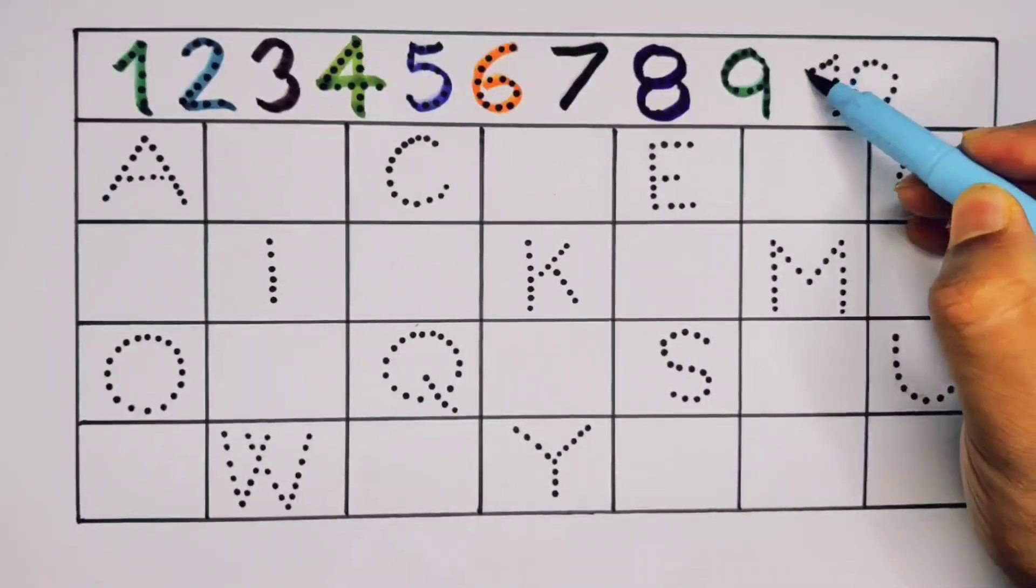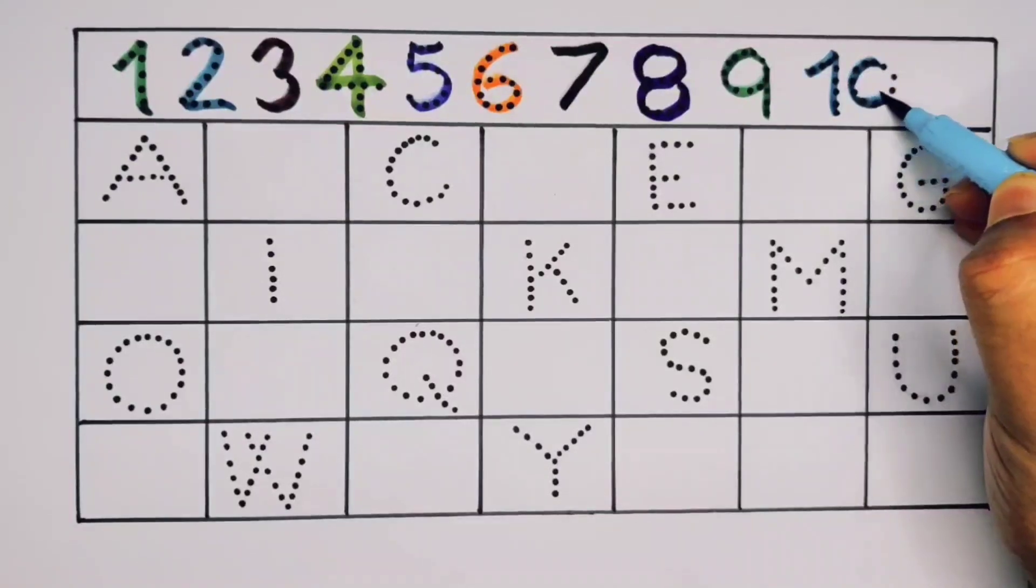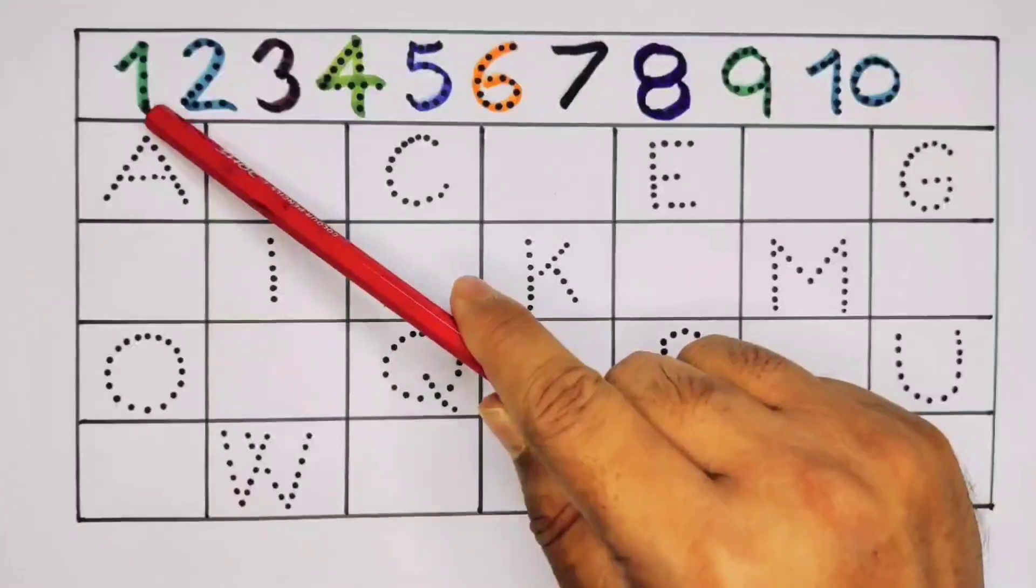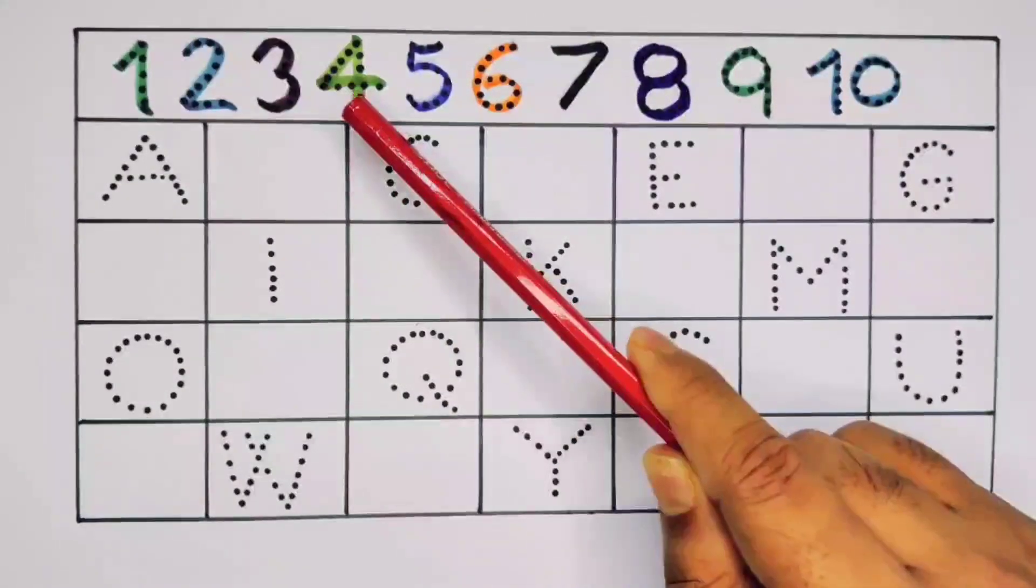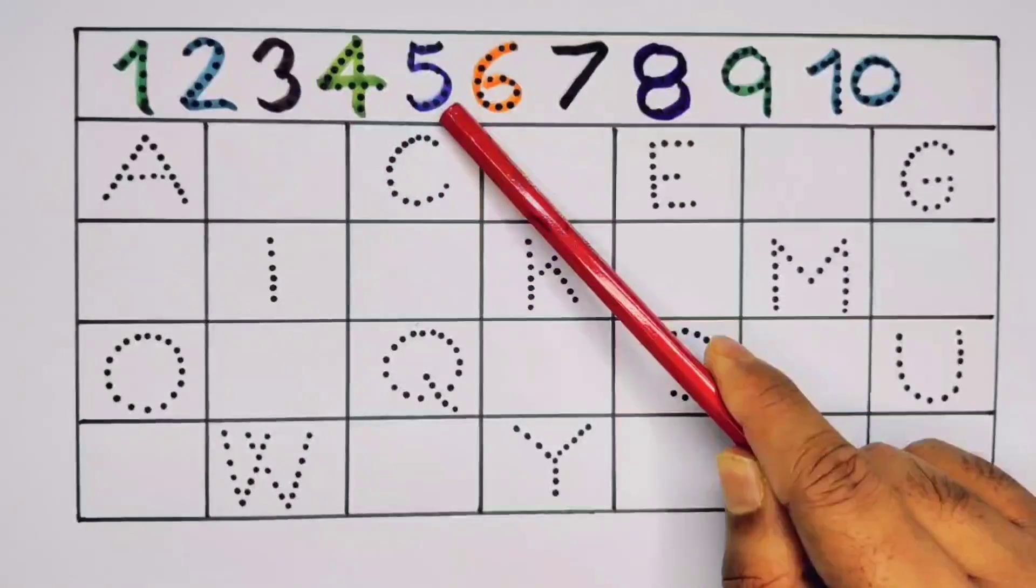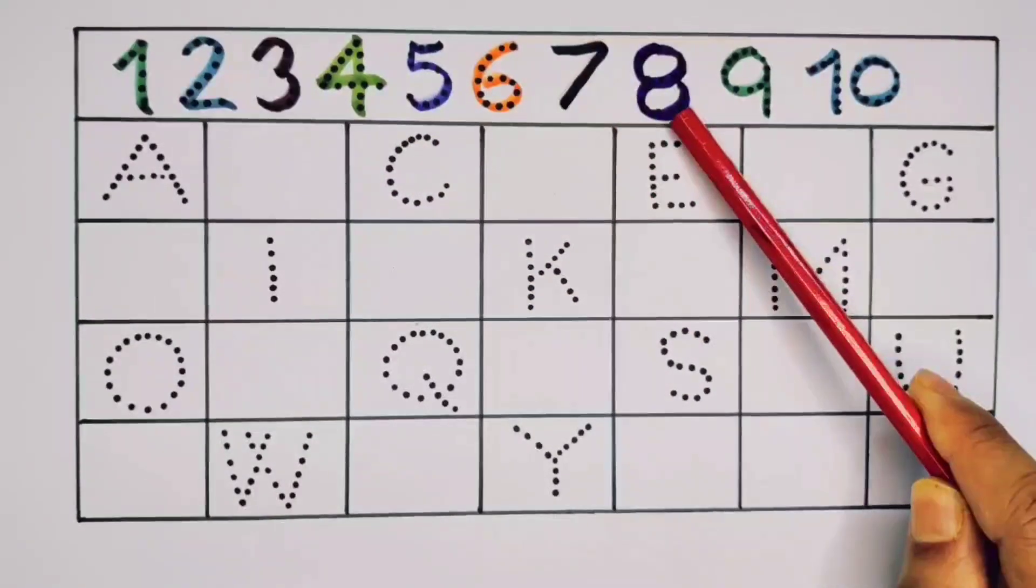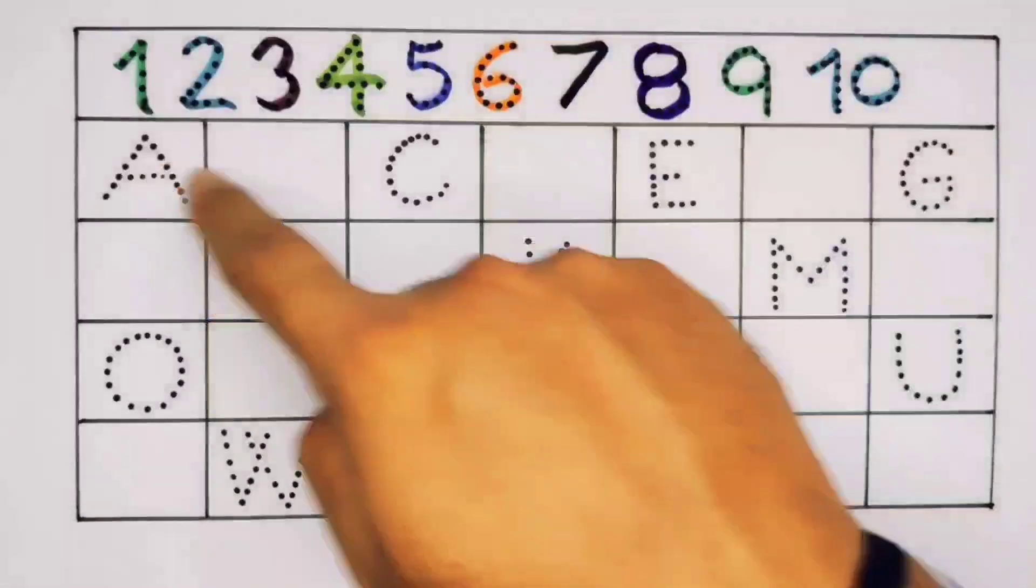Nine, number nine. One zero, ten, number ten. What we learned: we learned one, two, three, four, five, six, seven, eight, nine, and ten. Now the alphabet.